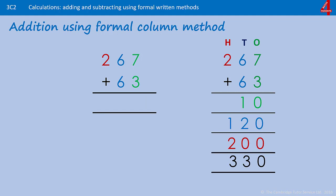This time I have added a hundreds column: 267 add 63. 7 and 3 is 10, so we put in the 0 and carry the 1. 6 and 6 is 12, add 1 is 13 — we put the 3 in and carry the 1. Remembering that that 1 is actually 100, but because we are using this quicker, more efficient method we are just going to refer to it as 1. Now we have 2 and we are adding on that 1 carried from the other column — we have 330.